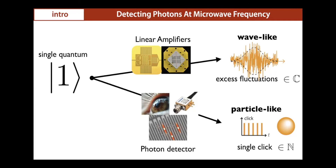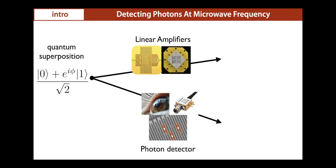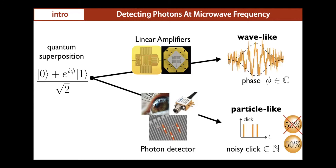What are linear amplifiers good at? There is a class of states where they are extremely useful. For instance, if you have a coherent superposition between the vacuum state and a single Fock state |1⟩, this superposition exhibits a relative phase e^{iφ}. If you try to measure this with an amplifier, the phase will be exhibited as an oscillation. Amplifiers are well suited to measure this kind of relative phase between quantum states. On the other side, a photon detector would just observe a noisy sequence of clicks with no way to reveal the relative phase between |0⟩ and |1⟩.